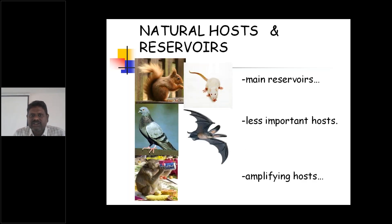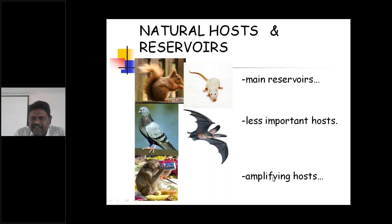The natural hosts and reservoirs of KFD include different animals. The main reservoirs are rats and squirrels. Less important ones include birds such as parrots, sparrows, and bats. The amplifying hosts are monkeys, which are very important in the transmission cycle.